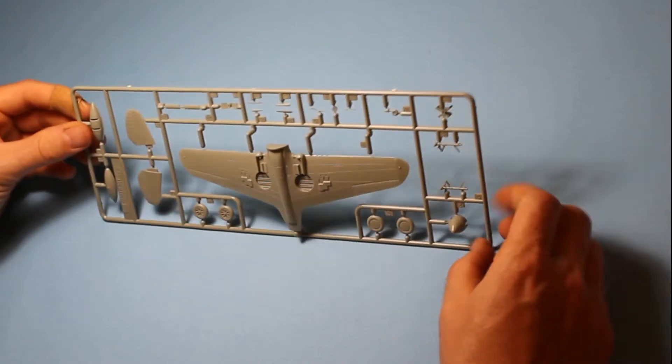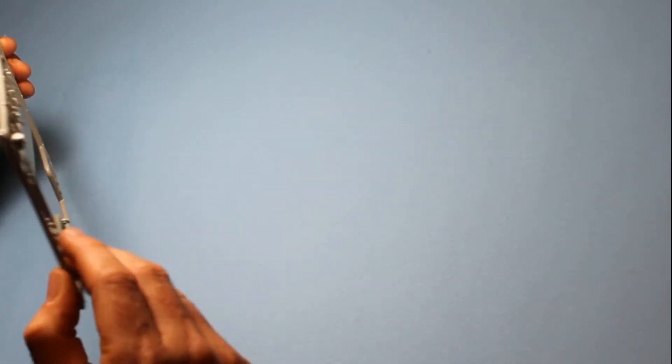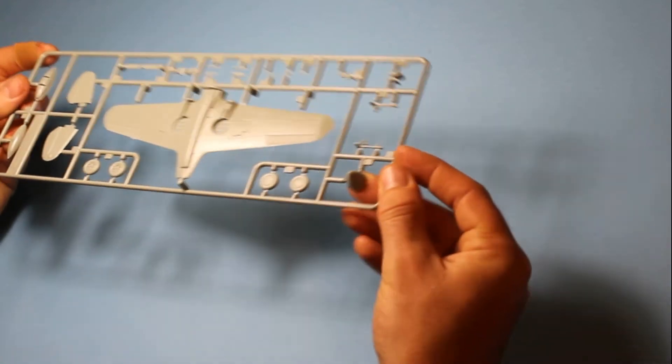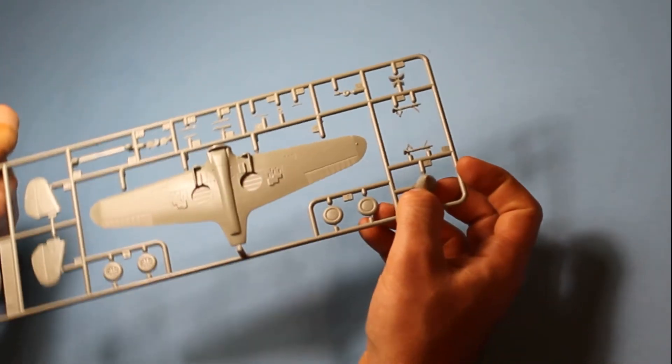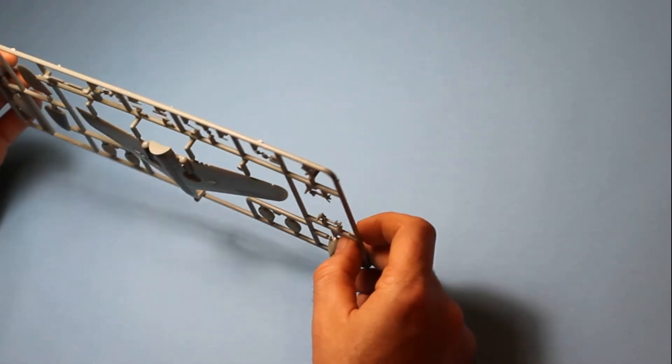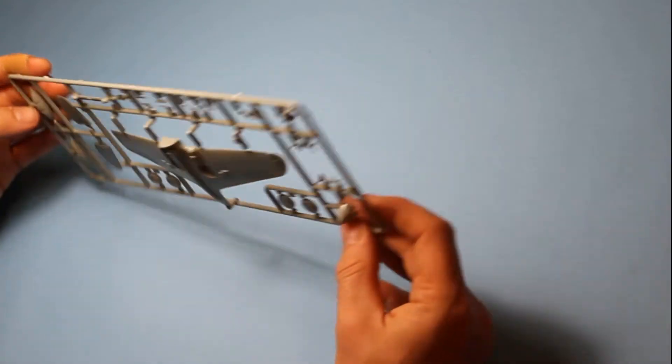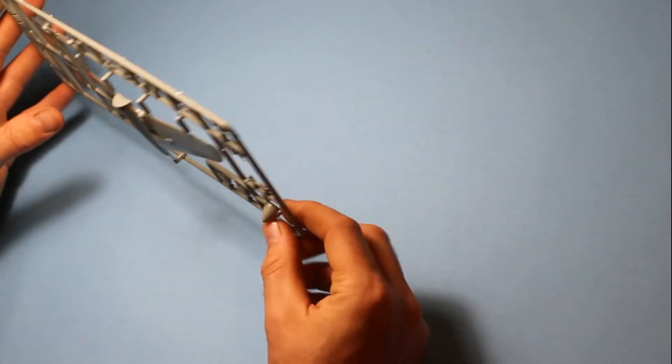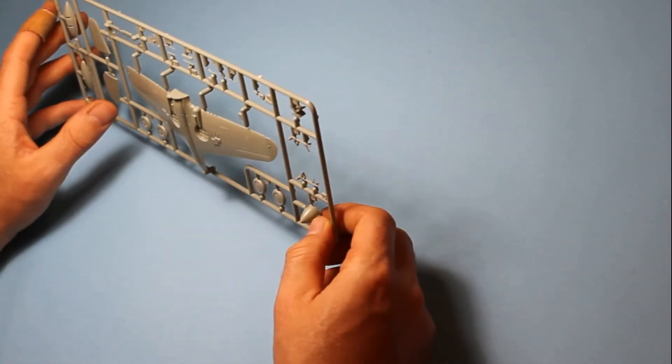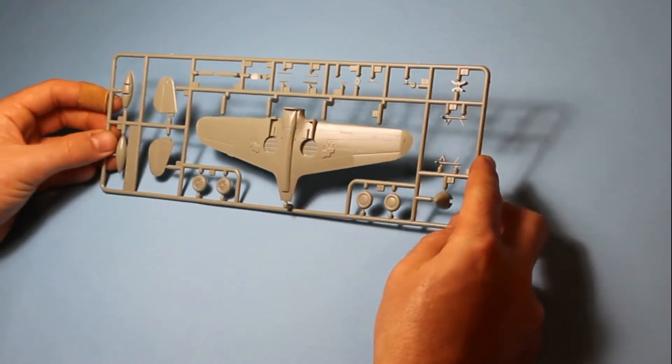Very nice nose cone there, with the recessed panel line running across it, which you don't get in all kits. Sometimes you have to add that, it's just a smooth nose cone, so it's quite good that that's there. I do have quite a large scratch in mine, where the two sprues have been put together, but I'm sure I can sand that out, so that's no problem.